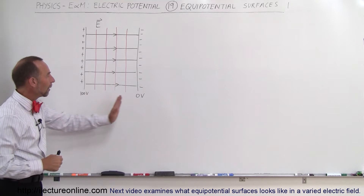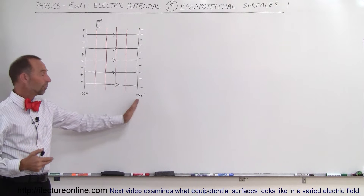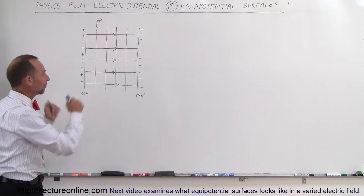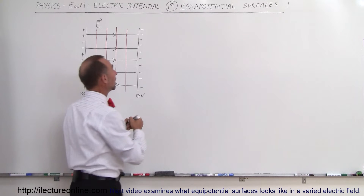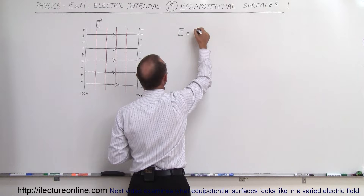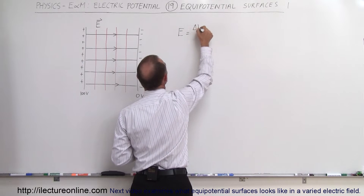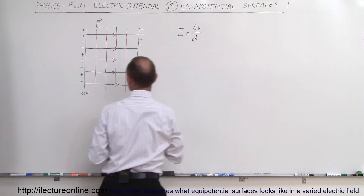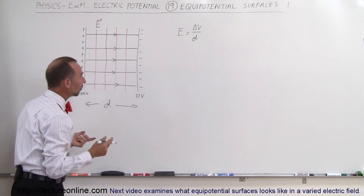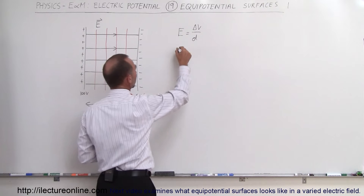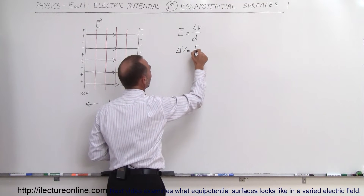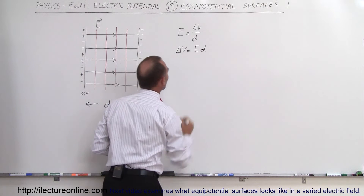Assume that on one end we keep the potential at zero volts, and therefore the potential on the other end is a hundred volts, so there's a hundred volt difference between them. Remember that the electric field strength is equal to the ratio of the change in potential divided by the distance over which we travel — so the distance would be this distance right here.